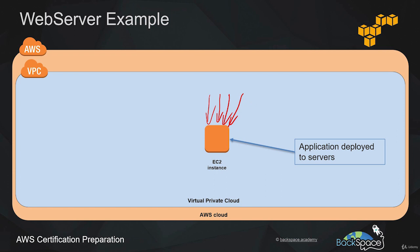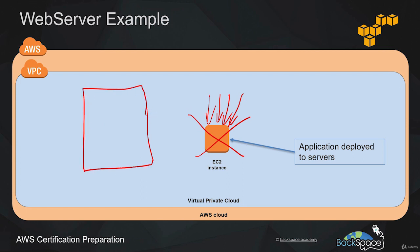What happens if this single EC2 instance becomes overwhelmed by demand? For example, we might have released a new product and our WordPress application cannot deliver web pages quickly enough. What we could do is tear down that instance and put in a bigger instance that could handle that demand. That is called vertical scaling, and that used to be all the rage 10 to 20 years ago.